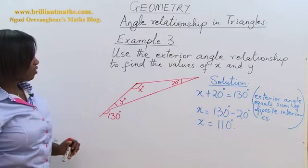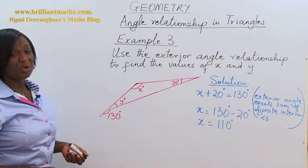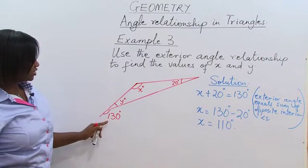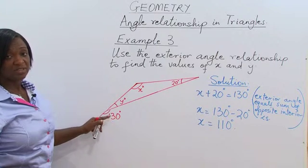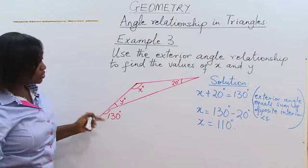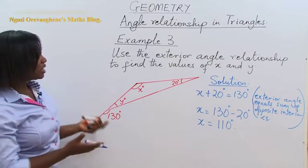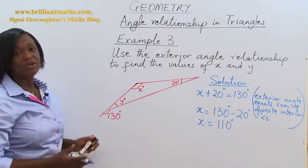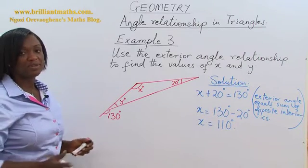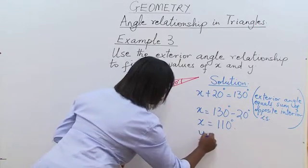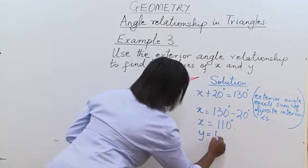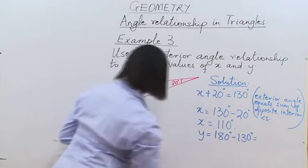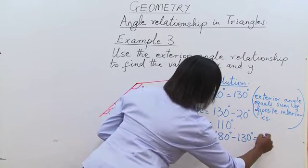Let's now find the value of Y. Y is on a straight line with 130 degrees. So we can simply subtract 130 degrees from 180 to get the value of Y. Also, we could use the sum of the triangle where 20 plus X plus Y adds up to 180 degrees. Choose whichever method you're comfortable with. So Y is equal to 180 degrees minus 130 degrees, which is equal to 50 degrees.